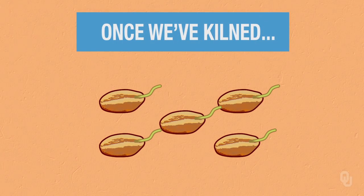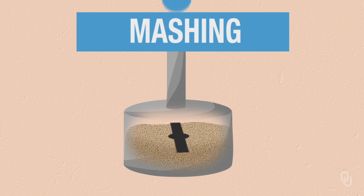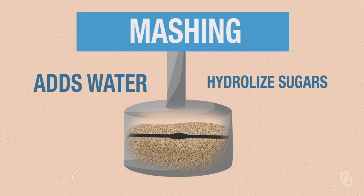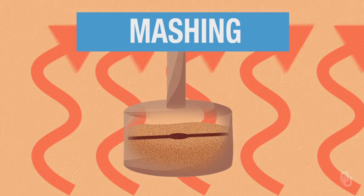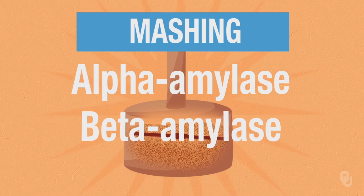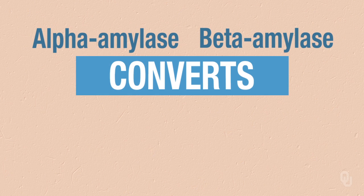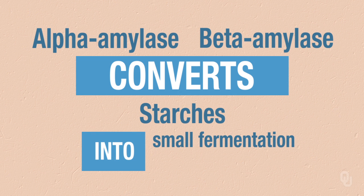Once we've kilned it, we're going to grind it, and then we can start the mashing process. The mashing process adds water so that we can start to hydrolyze our sugars, bringing the temperature up to get the optimum range for the starch hydrolysis enzymes — alpha amylase and beta amylase. We don't want to boil it, because if we get too hot we'll deactivate those two enzymes, giving the beer a very sweet flavor. So we leave it and let those two enzymes convert much of the starches into small fermentable sugars.